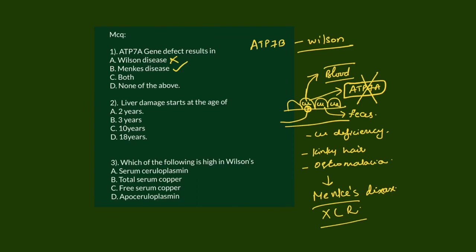MCQ 2: Liver damage starts at age 2, 3, 10, or 18 years? Although hepatic manifestations are usually seen in mid to late teenage years, liver damage actually starts as early as 3 years of age.